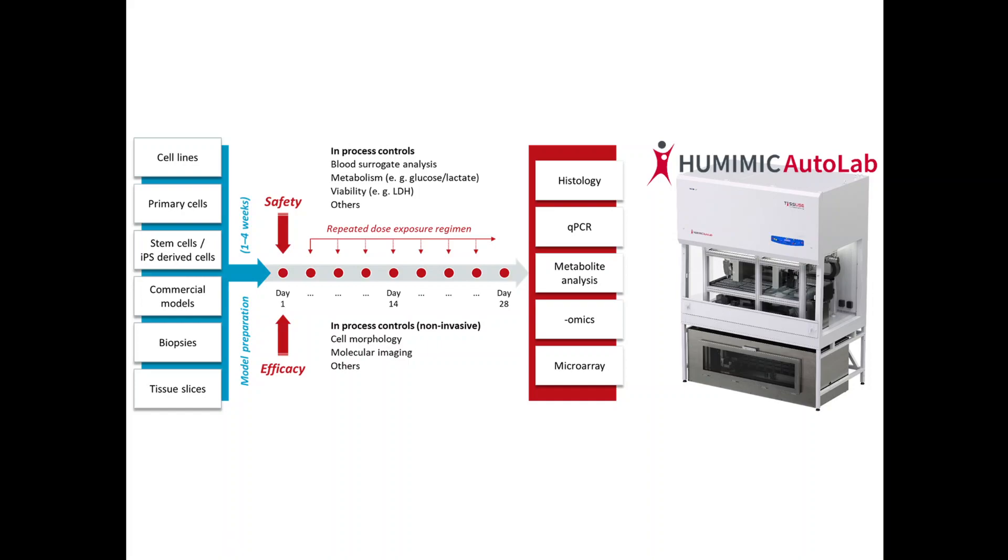What does an assay at tissues look like? We can work with cell lines, we can use primary cells, IPS derived cells, but we can also work with commercial models, biopsies or tissue slices. We add these into our chip, then start our culture of up to 28 days. So usually these are seven to 28 days. We can do safety or efficacy testing and repeated dose exposure regimen.